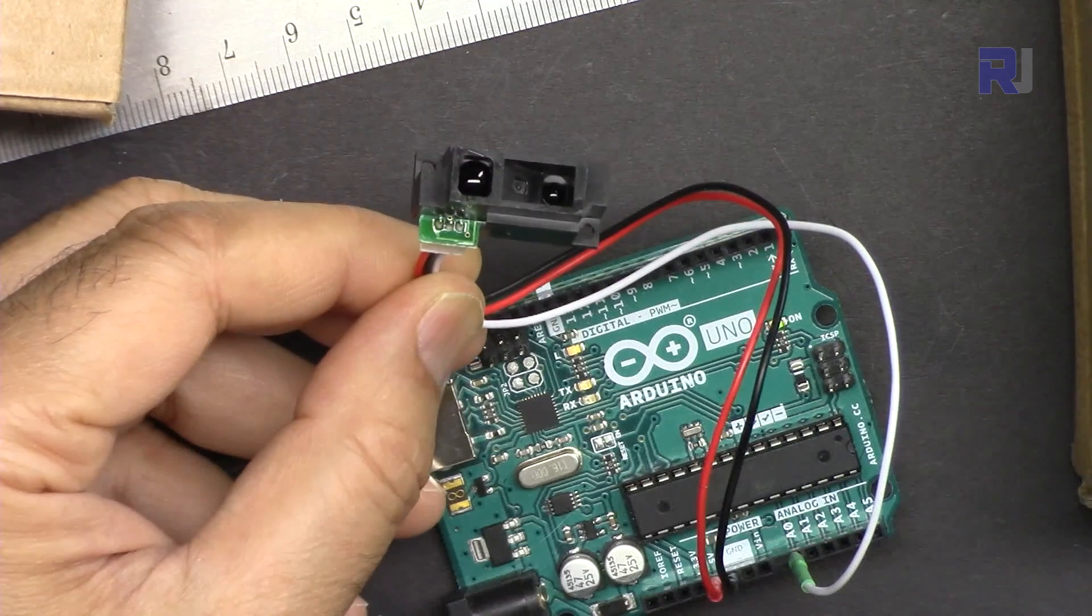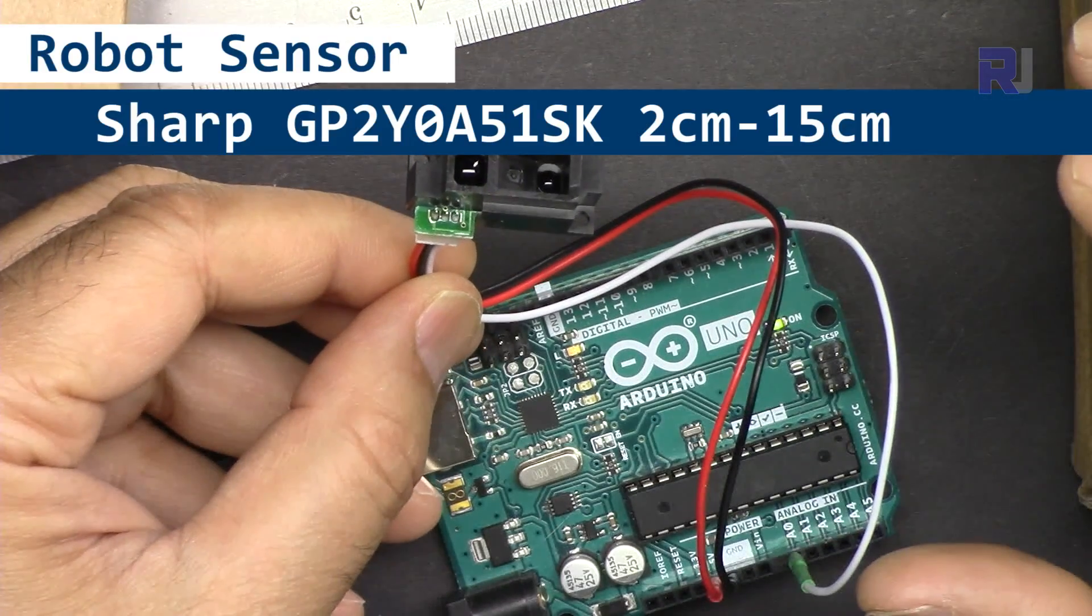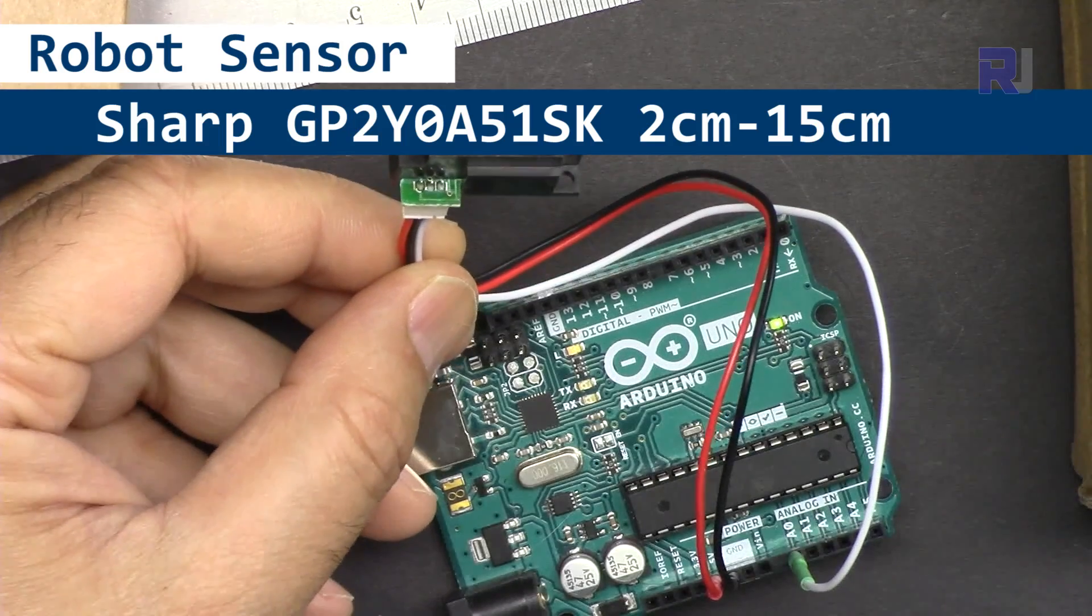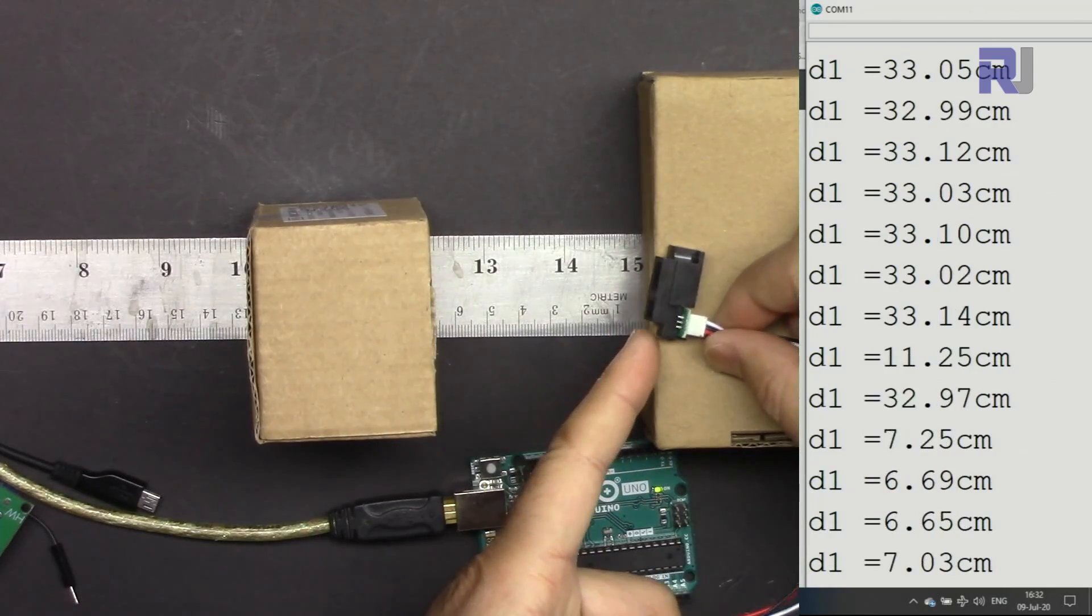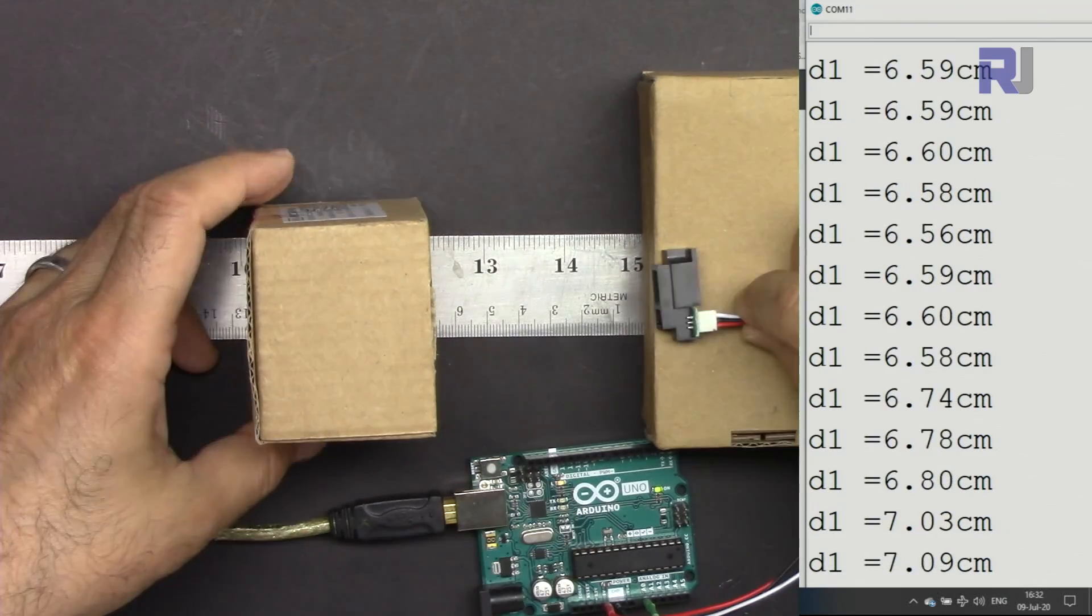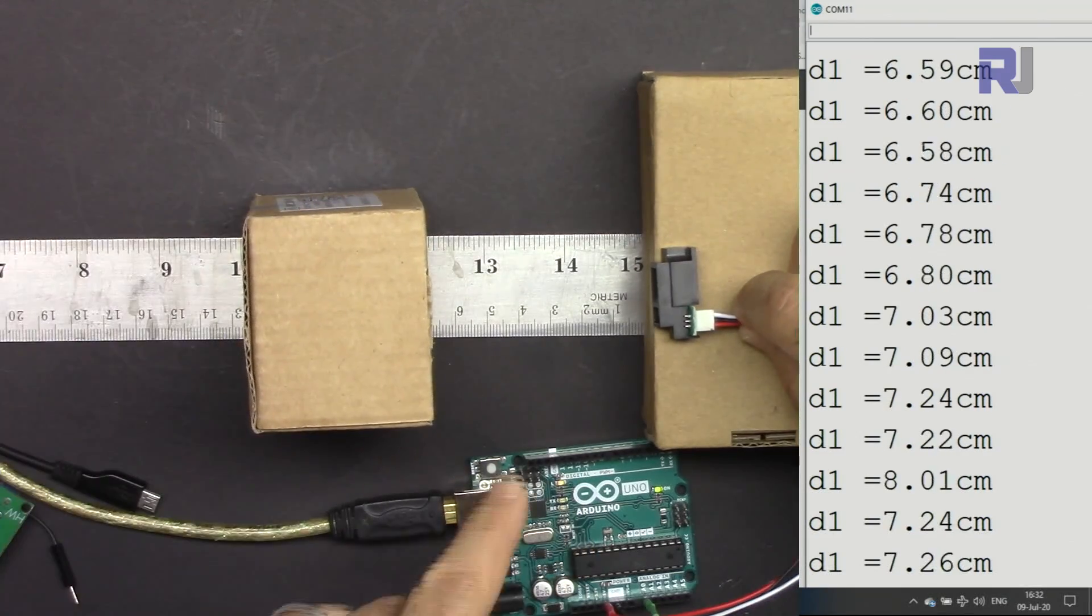Hi, welcome to an Arduino tutorial for Robojax. My name is Ahmad Shamshiri. In this tutorial we're going to learn how to use this Sharp infrared GP2Y0A51SK distance sensor that measures up to 15 centimeters using Arduino.